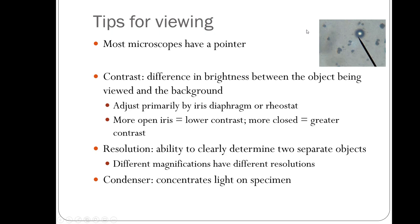Most microscopes have a pointer, which looks like a line when you look through the eyepiece. Some students have thought this was a problem, but it's there intentionally — you can position the pointer on whatever you're examining to show it to someone else as a landmark or reference point.